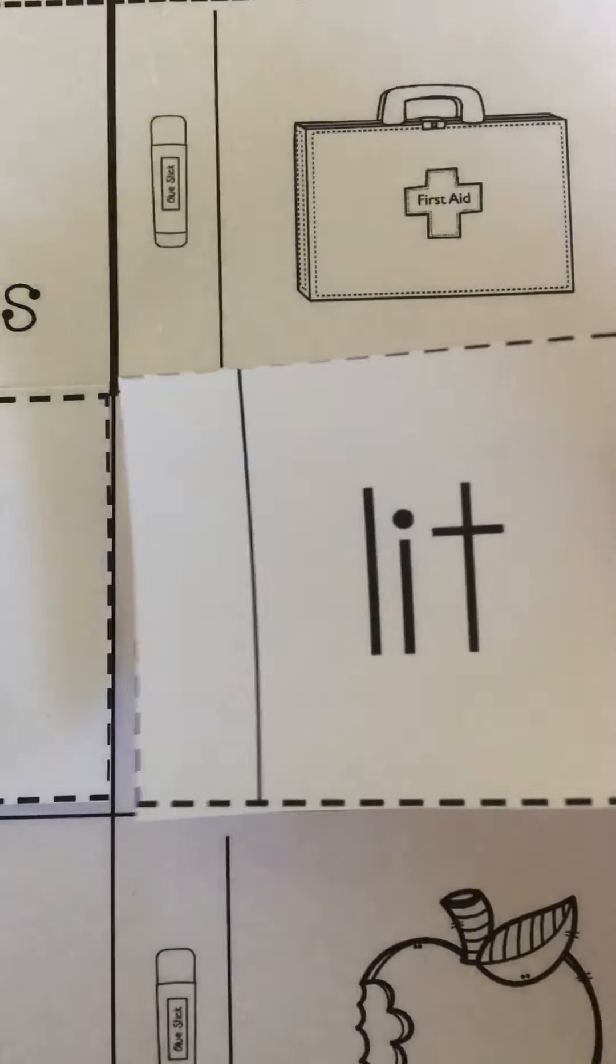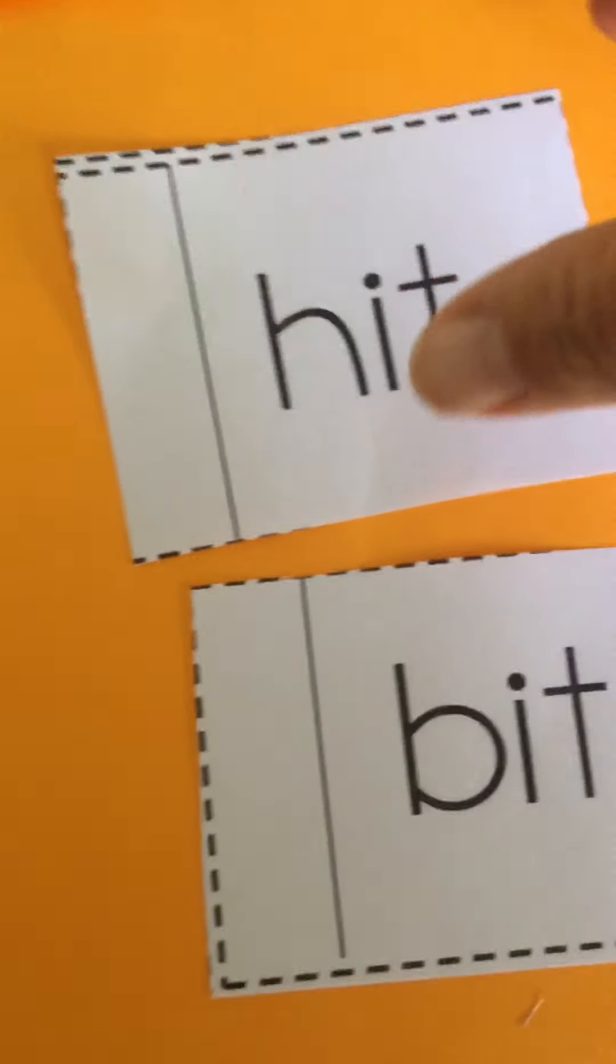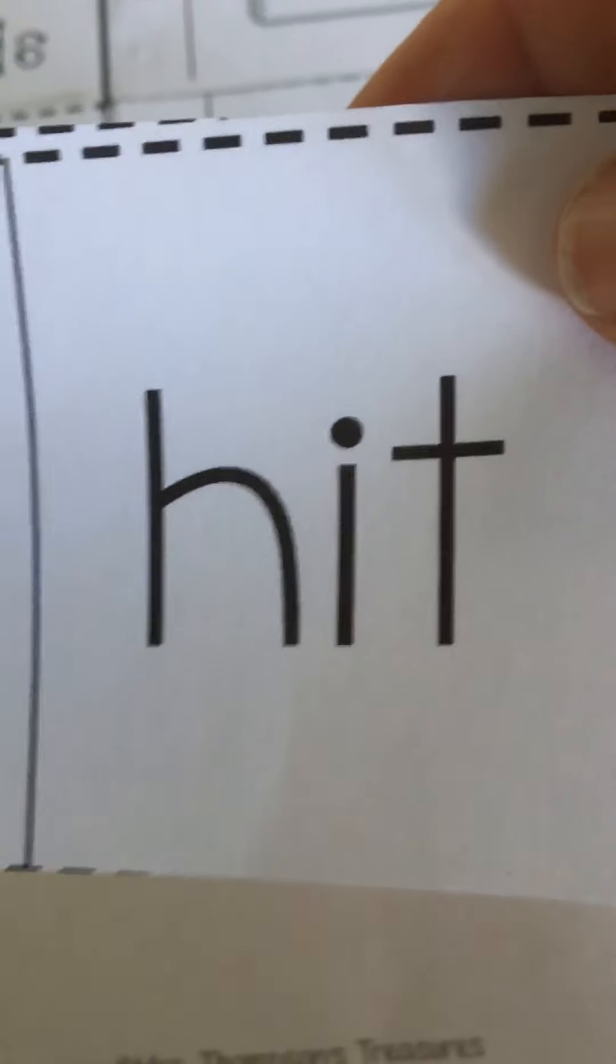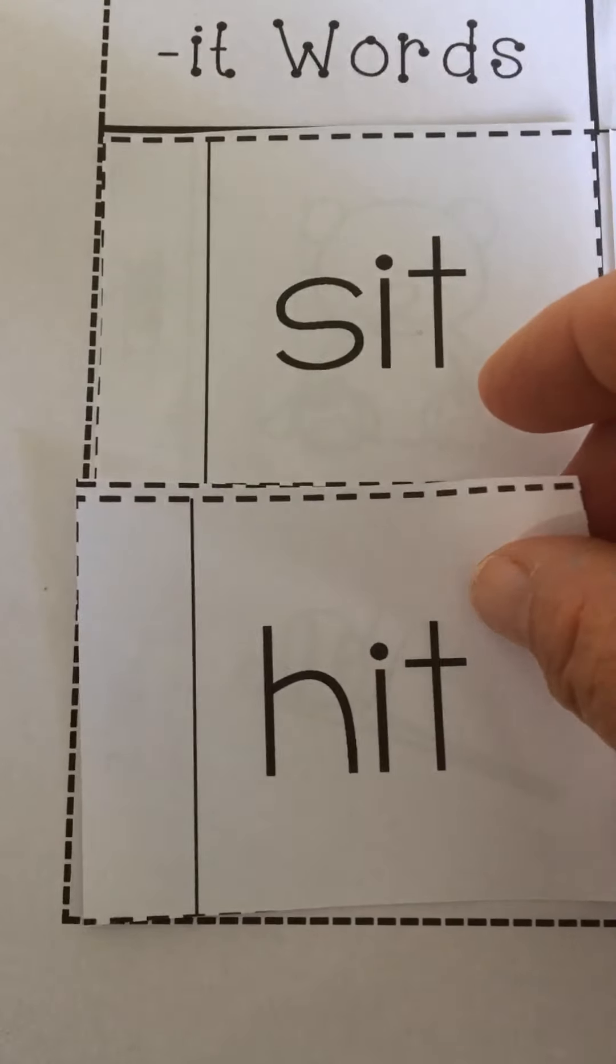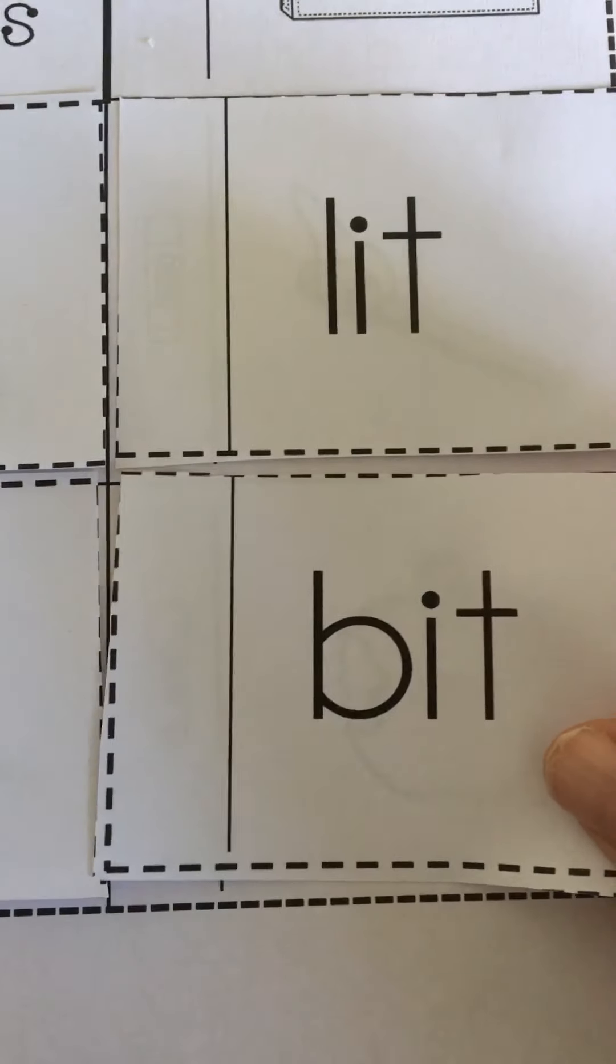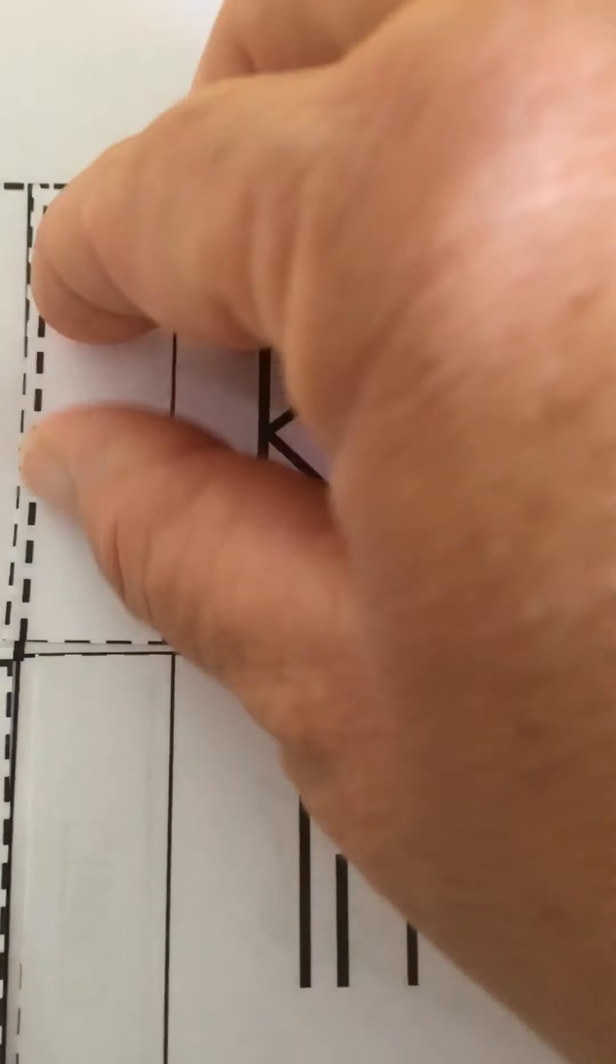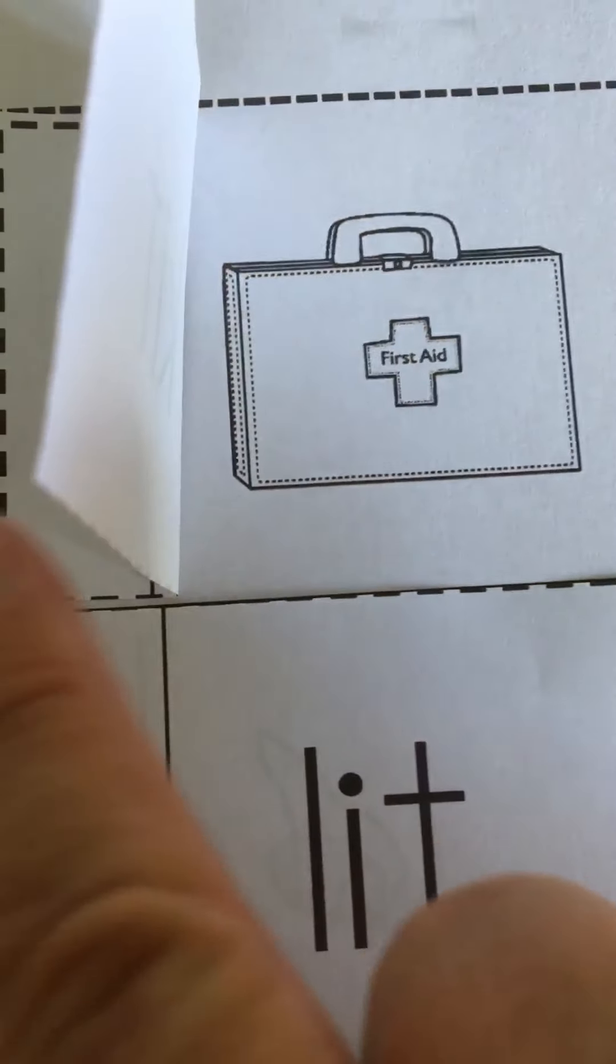Now let's do hit. I hit the ball with the bat. Oh, there it is. Hit. And let's do bit. I bit into the apple. There we go, bit. And finally kit, the first aid kit. Okay, now that you've glued them on you can flip it over and you see the word and the picture.